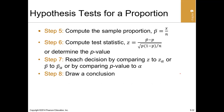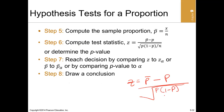Let's remember how we compute the Z value of a proportion. The Z value of a proportion is the sample proportion minus the population proportion, all over the square root of p times (1 minus p) over n. This is how we compute the Z value of a proportion.